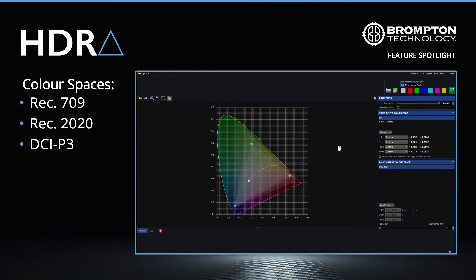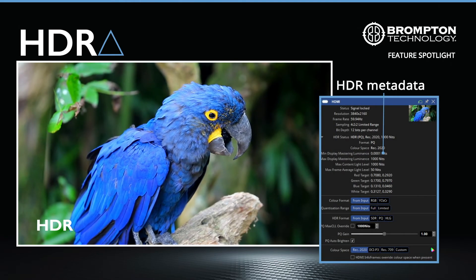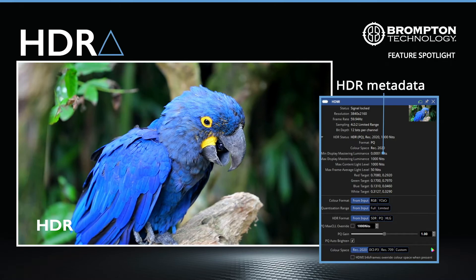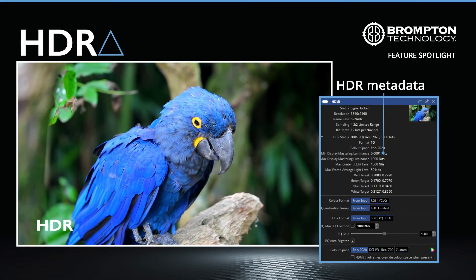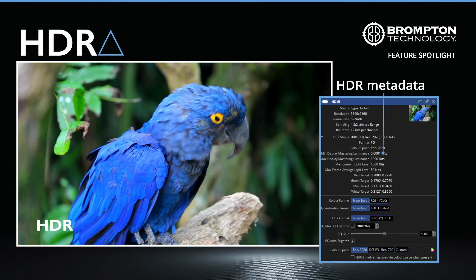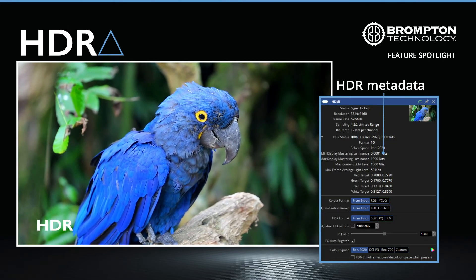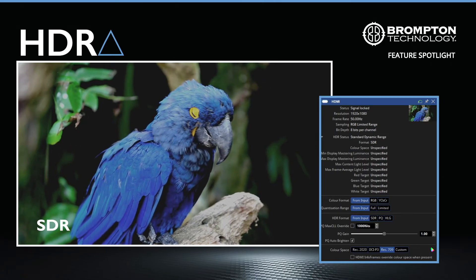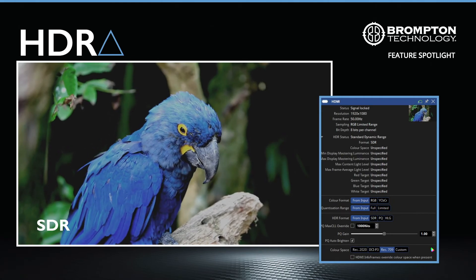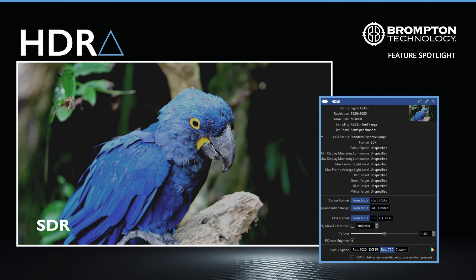All industry standard colour spaces are supported, including Rec.709, DCI-P3 and Rec.2020, as well as custom ones that can be set in real time. Our systems make use of the metadata to automatically set the format and colour space for the content playing as the video is received. We also include all the tools needed for our users to define or override how the incoming video input is interpreted on the fly. Our Tessera LED processors can seamlessly switch between SDR and HDR content streams on any single input without interrupting video output, allowing for back-to-back display of various content sources.